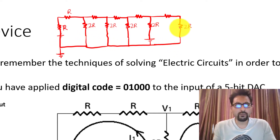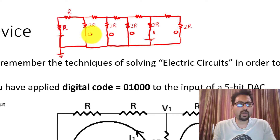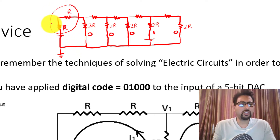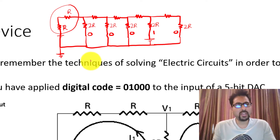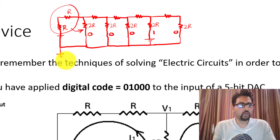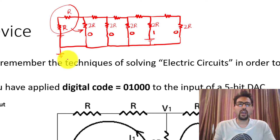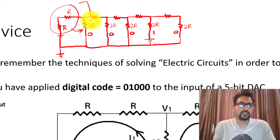Let me write the binary code we have applied so you can easily see what is happening. These two resistors are in series, making the total resistance 2R, and it comes in parallel with this 2R resistor. A 2R resistance in parallel with 2R resistance yields a net resistance of R. So you are going to have a resistance of R in this location.